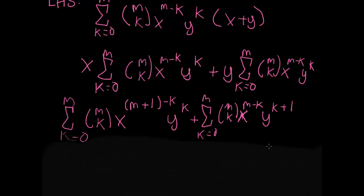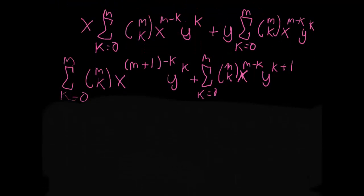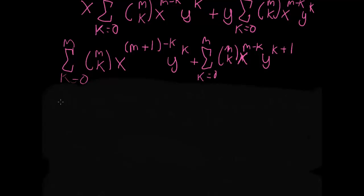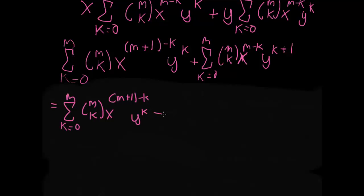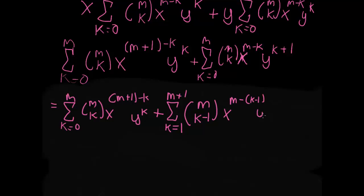Next is the trickier part. We want to change the summation index of one of the terms. We keep the first summation the same, going from k equals 0 to m. For the second summation, we shift the index so that k now starts at 1 and goes to m plus 1. Wherever we see k inside the summation, it becomes k minus 1, so the expressions remain equivalent: m choose k minus 1, x to the m minus (k minus 1), y to the k minus 1 plus 1.